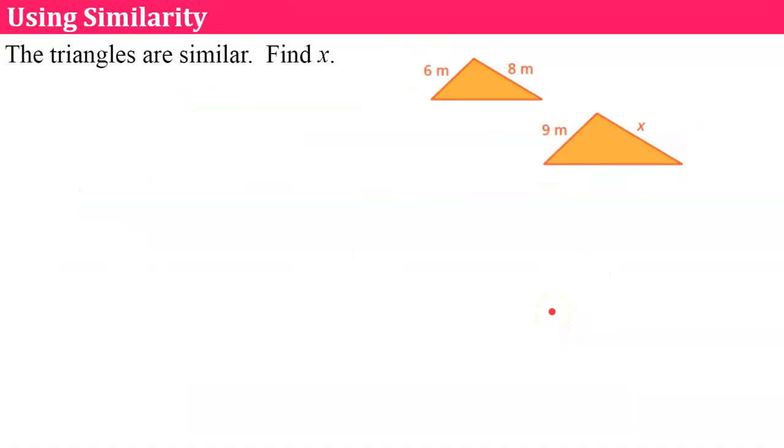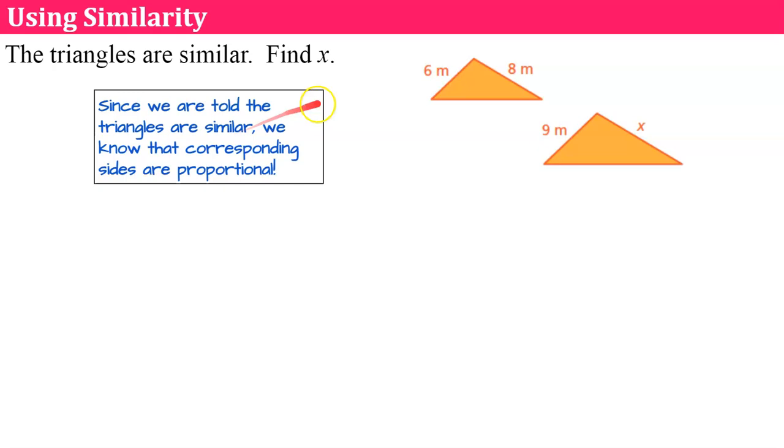Now we can also use knowing that two figures are similar to find an unknown side. They tell us in this problem that the triangles are similar. Seeing as they're telling us they're similar, we know that the corresponding angles are congruent and the corresponding sides are proportional. So we're going to write a proportion to find this missing side. Six corresponds to 9, eight corresponds to x. So our ratio is 6 over 9 is equal to 8 over x.